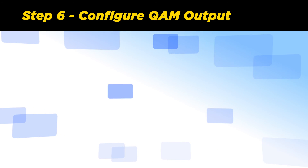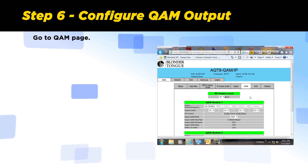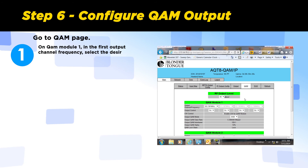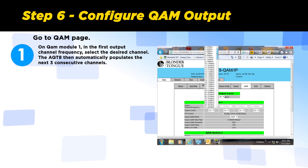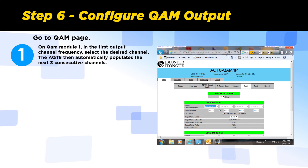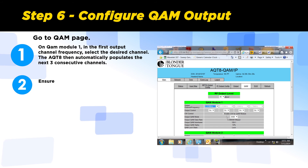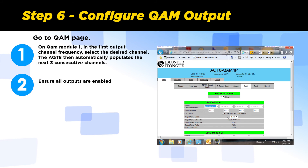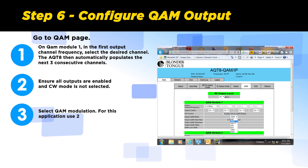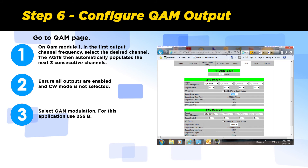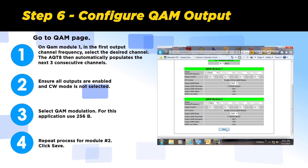Step 6: Configure QAM outputs. Go to the QAM page to set output channels. On QAM module 1, in the first output channel frequency, select the desired channel. The AQT8 then automatically populates the next three consecutive channels. Ensure that all outputs are enabled and that CW mode is not selected. Select the QAM modulation — for this application, we will use 256B. Repeat the process for module number 2. Click Save.